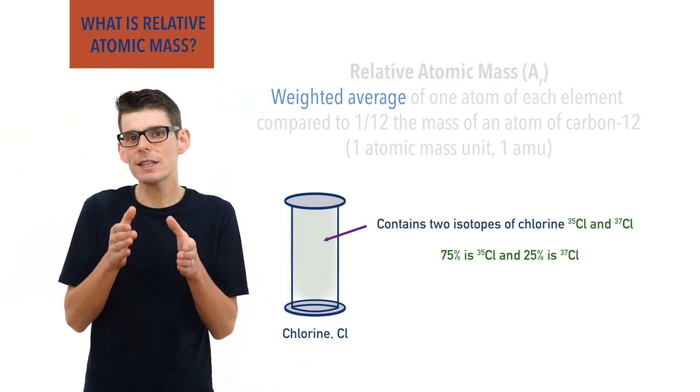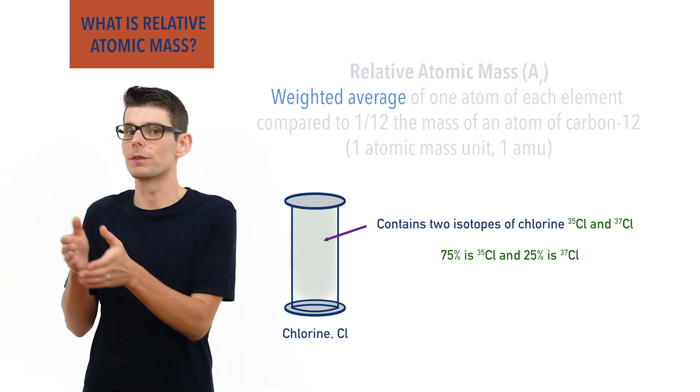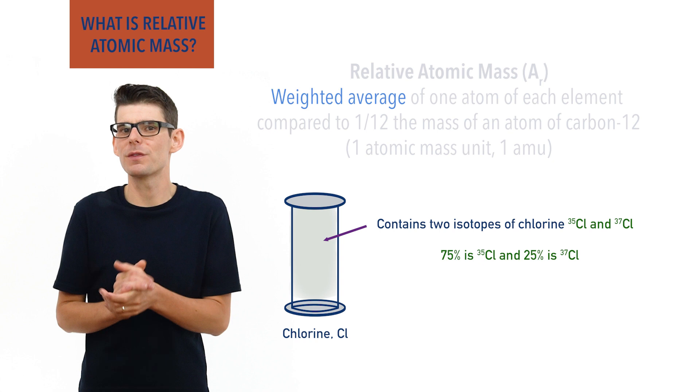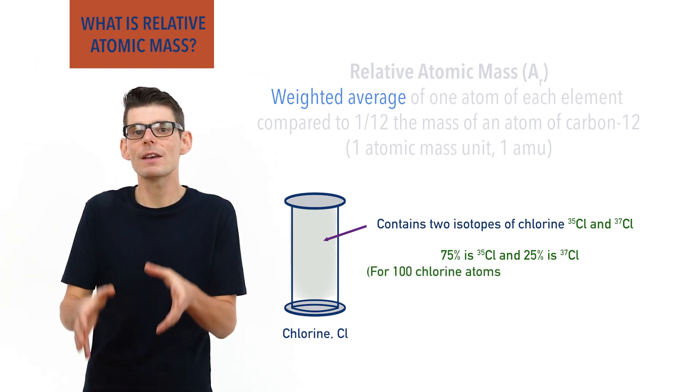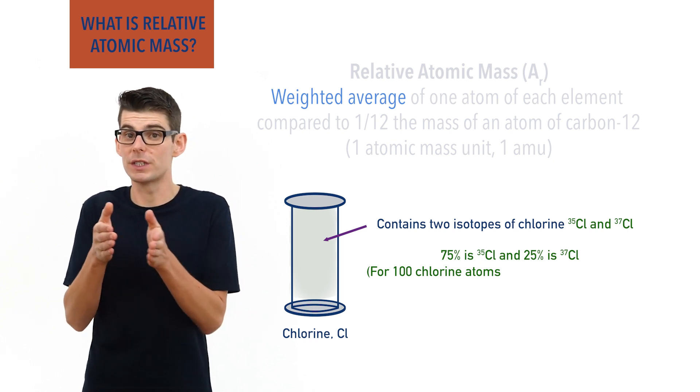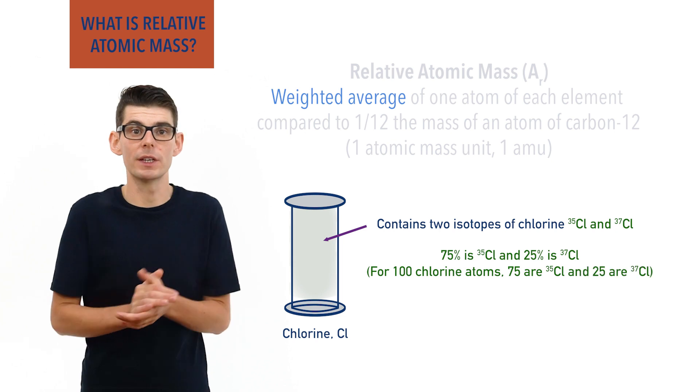The average relative atomic mass of all the chlorine atoms will be 35.5. Another way of thinking of this is that for every 100 chlorine atoms in a sample, 75 of them will be the 35 isotope and 25 of them will be the 37 isotope.